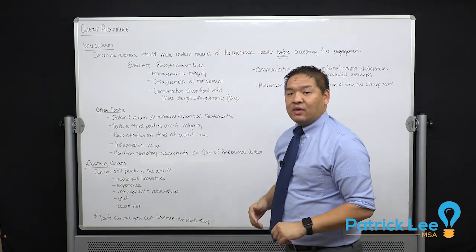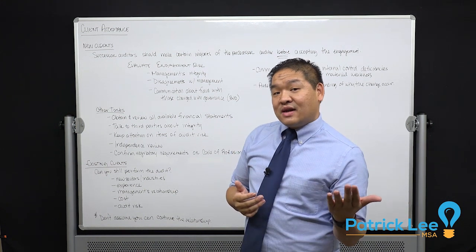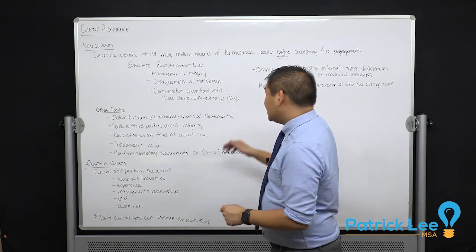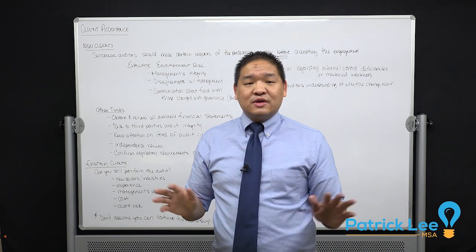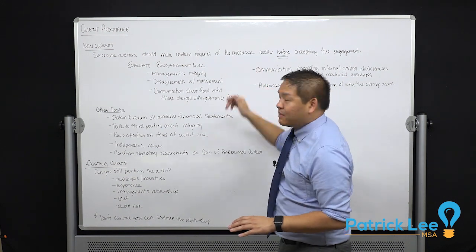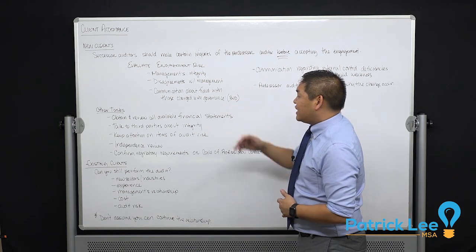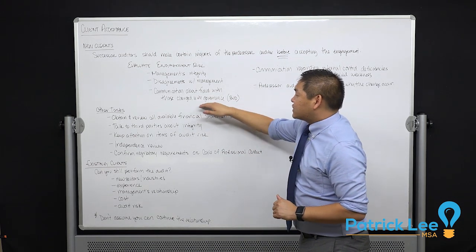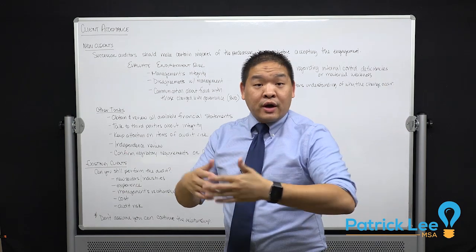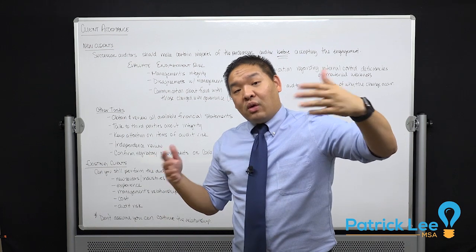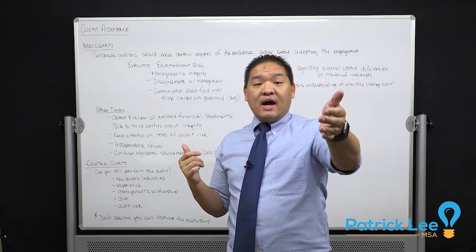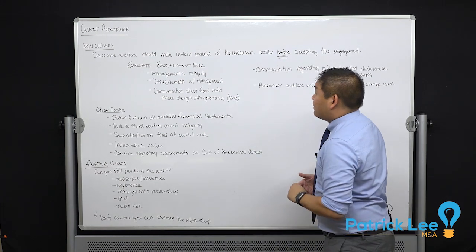Things to consider include management integrity — are they honest? If they're dishonest, there's a higher likelihood they're committing fraud, and we don't want to be involved with anybody committing fraud. Were there any disagreements with management, particularly noted by the predecessor auditor? We should also ask about any communications about fraud with those charged with governance — meaning the board of directors. Did the predecessor auditor have discussions about fraud within the organization with the board, and what were those conversations like?